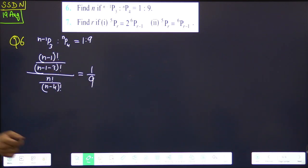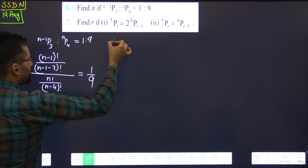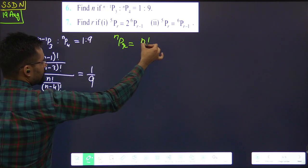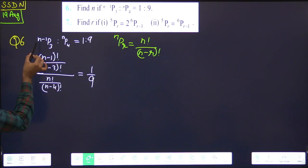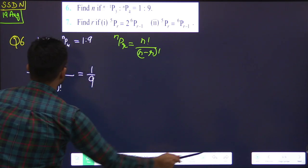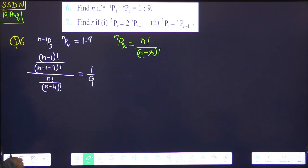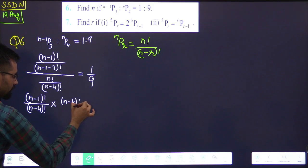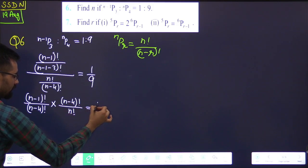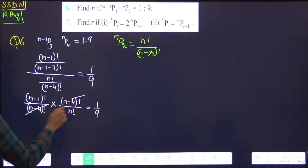(n-1) factorial upon (n-1-3) factorial. Clear? Upon n factorial upon (n-4) factorial. Is equals to 1 by 9. Any doubt? Clear? How to solve. Look, tell me. Do you know the nPr formula? What is it? n factorial upon (n-r) factorial. What is n here? n-1. What is r? 3. Put the values in the formula. Clear? Okay. Now what happens to the one below? Reciprocal. (n-1) factorial upon. What will it be? (n-4) factorial. Into. Take reciprocal of the bottom one. (n-4) factorial upon n factorial. How much? 1 by 9.